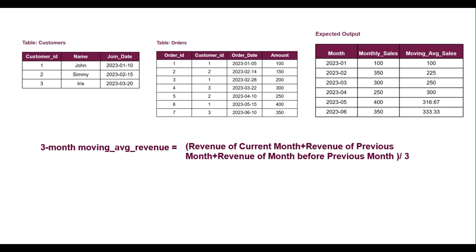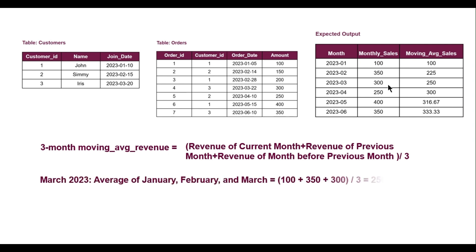We start calculating from March, since we've been told the moving average should start once three months of data are available, and three months of data is first available in March. For March 2023, the moving average is the average of January, February, and March: 100 plus 350 plus 300 divided by 3, which is 250. For April, it is the average of February, March, and April: 350 plus 300 plus 250 divided by 3, which is 300.